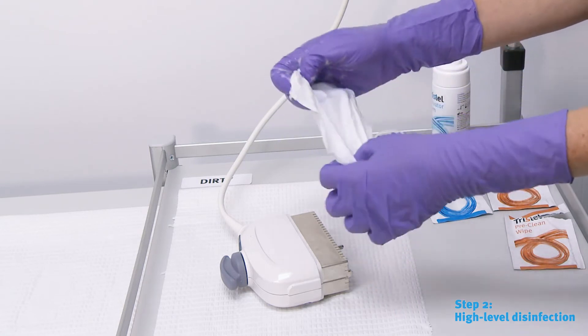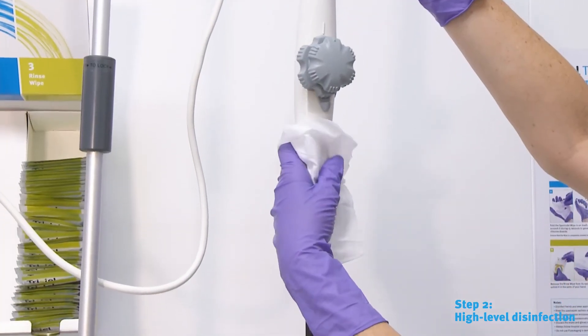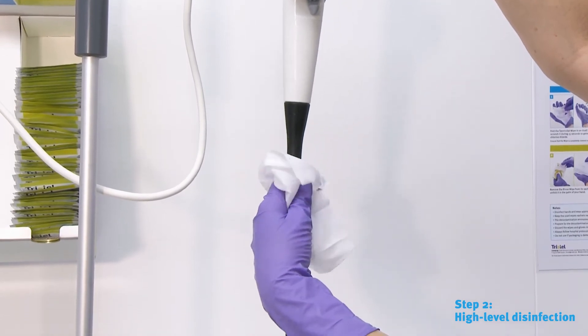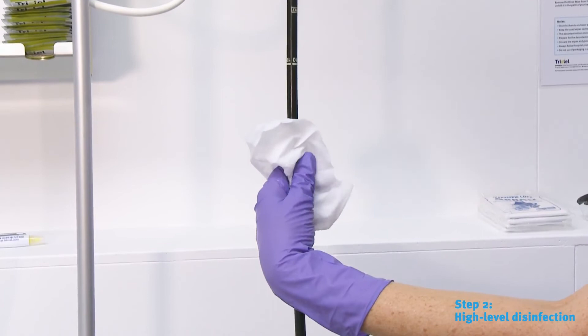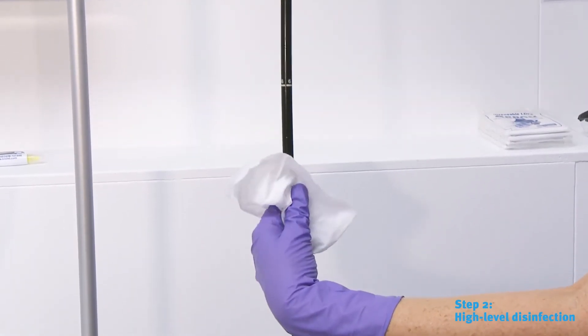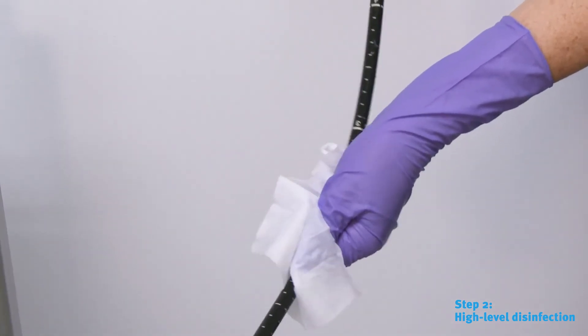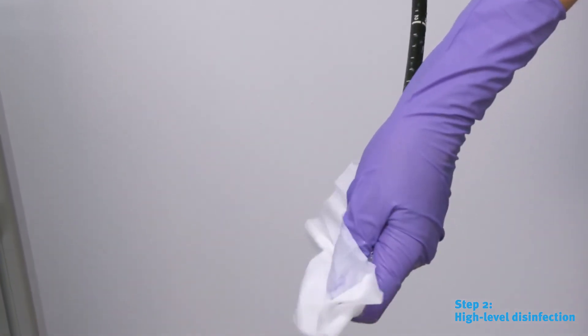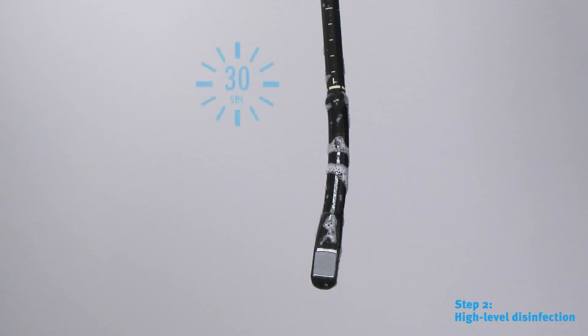Unfold the activated Sporicidal Wipe in the palm of your hand. Wipe the toe probe handle and insertion tube to ensure all areas are covered with foam. Discard the used wipe to clinical waste. Observe a minimum contact time of 30 seconds.